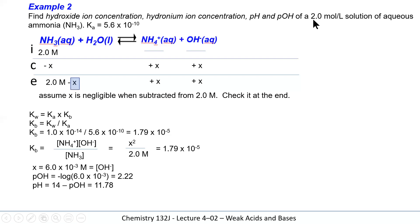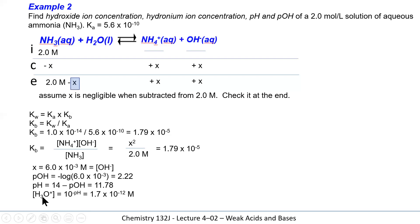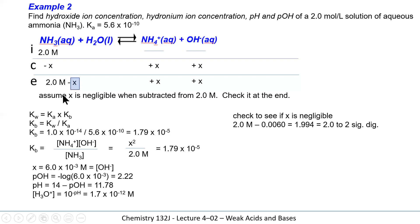Significant figures: two significant digits were given for concentration and Ka, so pH = 11.78 with two decimal places. The hydronium concentration equals 10^(−11.78) = 1.7×10⁻⁵. To verify X is negligible: X was 6×10⁻³, and 2.0 − 0.006 rounds to 2.0 to two significant digits, confirming X was indeed negligible.